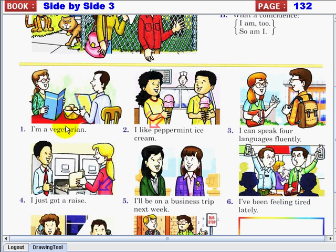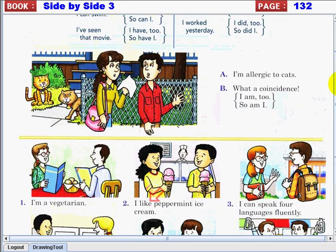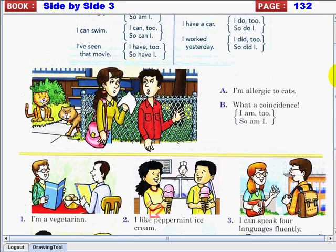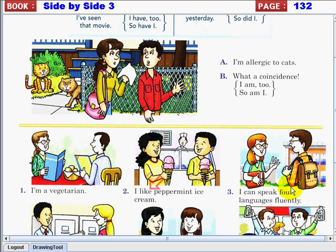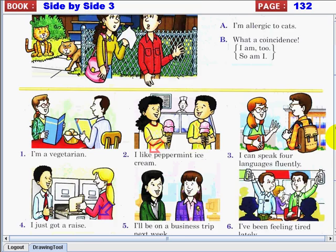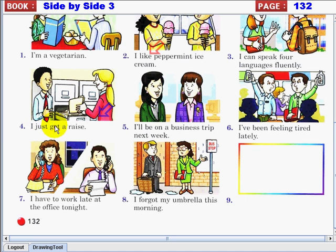Number two, I like peppermint ice cream. Yeah, so do I. You can say it like that, or you can also say I do too. Number three, I can speak four languages fluently. So can I, or I can too, right.